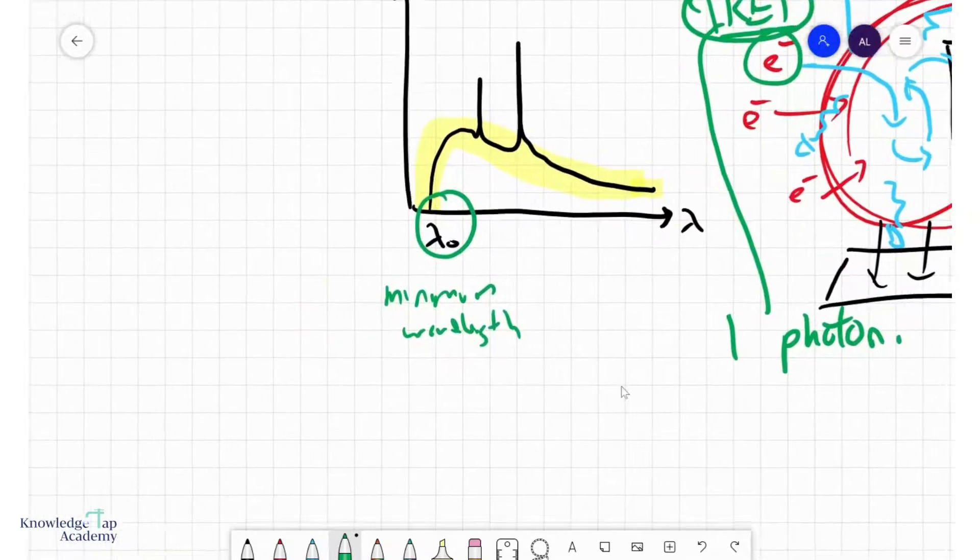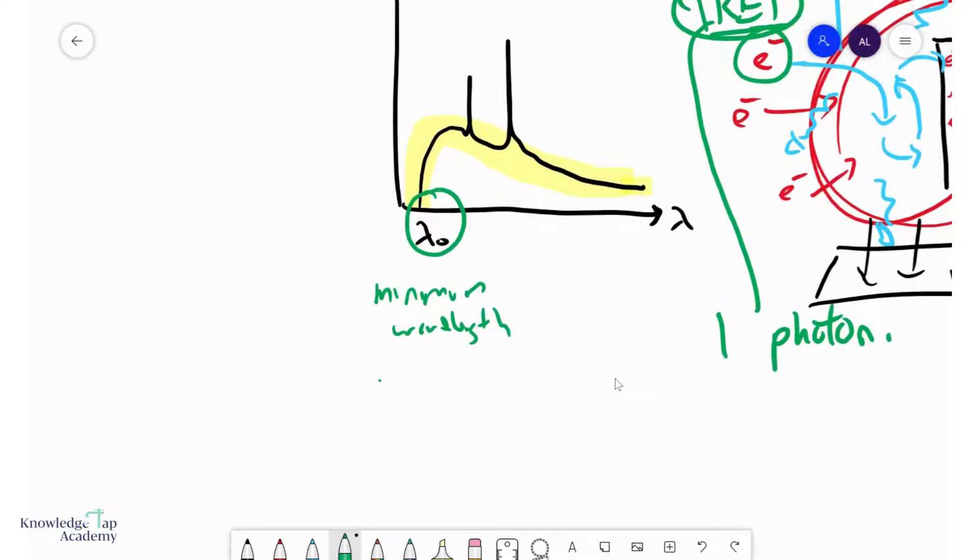And so the energy of this photon would be hc over lambda naught. And this energy of the photon would be the amount of kinetic energy that the bombarding electron possesses, which is equal to the amount of electric potential energy that it lost in the initial acceleration process qV.